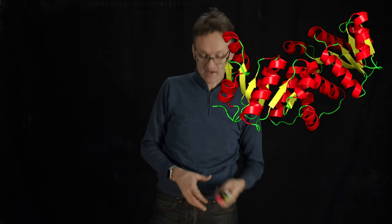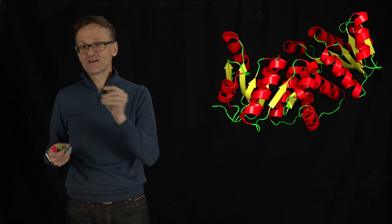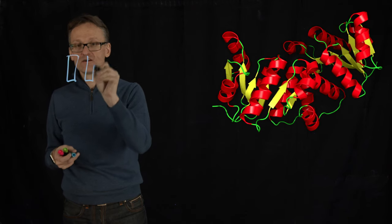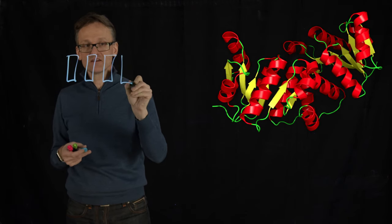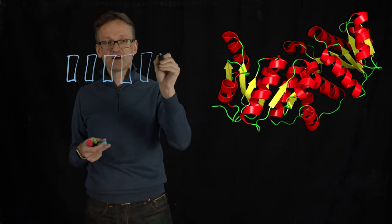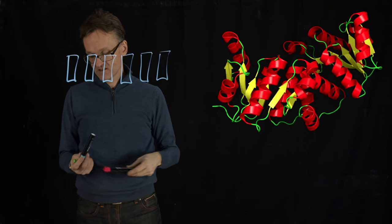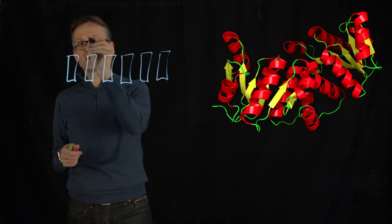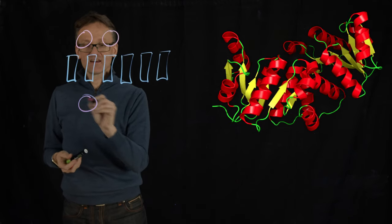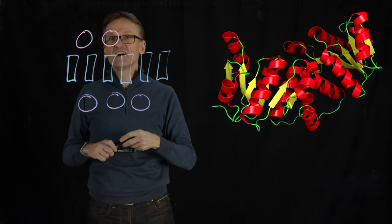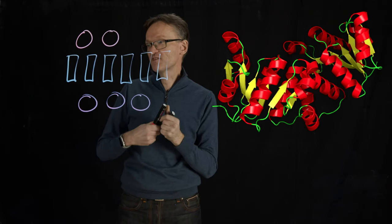We can draw that schematically. So I had one, two, three, four, five, six beta strands and then I have two helices up here and I have three helices down here. I happen to know this one, that's why I can draw it fairly quickly.